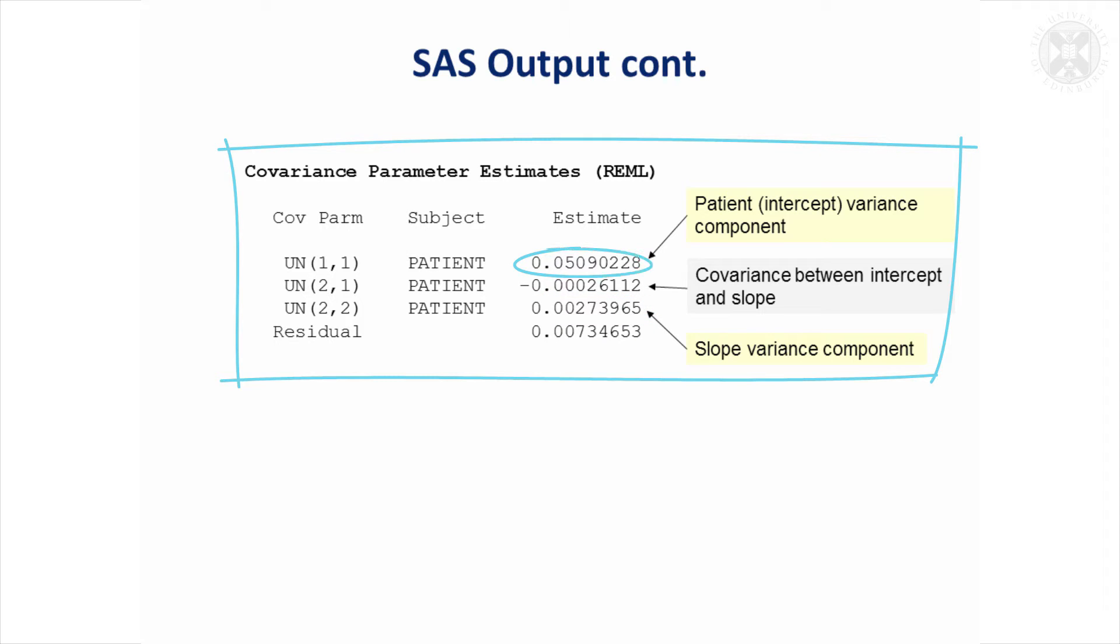This is the variation in the intercepts. And then, as I said, you have to correlate your intercepts and your slopes in any regression model. So that's the covariance coming in there. And you've got the overall residual variance component, which is the variability of individual observations around the slopes.